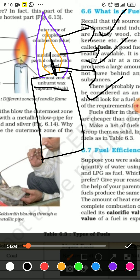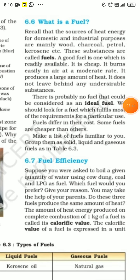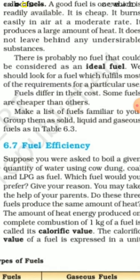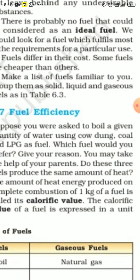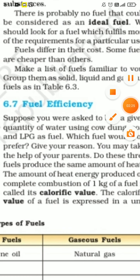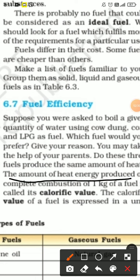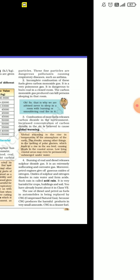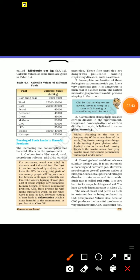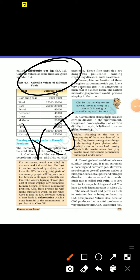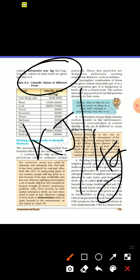You will make this diagram in your fair notebook. Now I will discuss fuel efficiency. Fuel efficiency means the amount of heat energy produced on complete combustion of 1 kg of fuel is called its calorific value. Underline these lines. It is measured in kilojoule per kg.